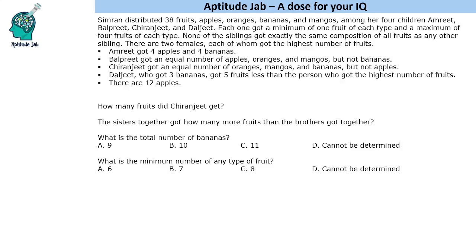Hello everyone, welcome to Aptitude Jam. This is another puzzle based on numbers. It says that Simran distributed 38 fruits — apples, oranges, bananas and mangoes — among her four children Amrit, Balpreet, Chiranjeet and Daljeet. Each one got a minimum of one fruit of each type and a maximum of four fruits of each type. None of the siblings got exactly the same composition of all fruits as any other sibling.